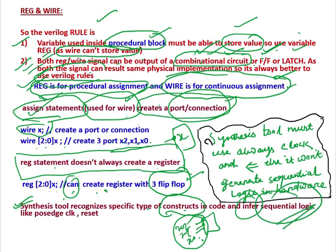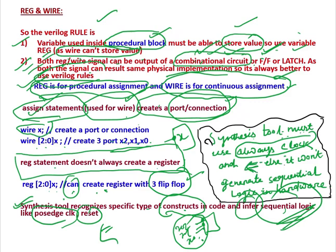For sequential logic, the synthesis tool must use always with a passage of clock and non-blocking assignment; otherwise it is not going to generate sequential logic in hardware. If you simply include a non-blocking assignment but don't use a clock, the synthesis tool is not going to generate any sequential hardware.